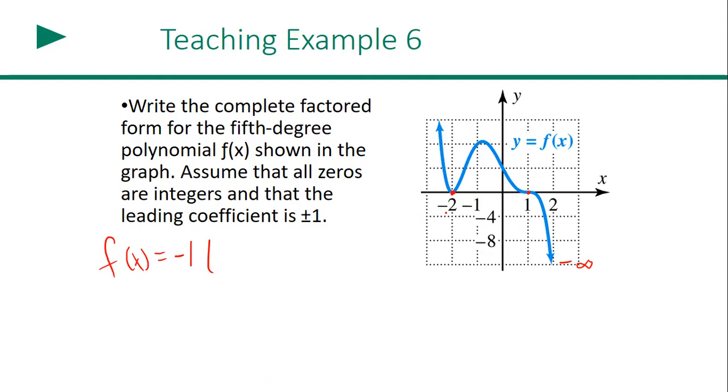First x-intercept is negative two. So therefore the factor would be what? X plus two. Perfect. Because it is touching, it's tangent to the x-axis. That means that it's not just x plus two singular, it's x plus two squared.